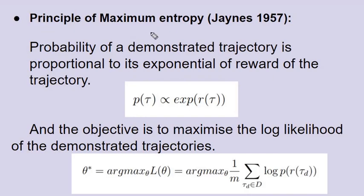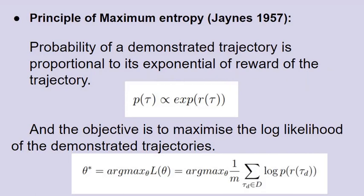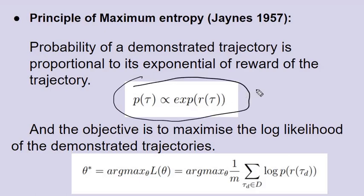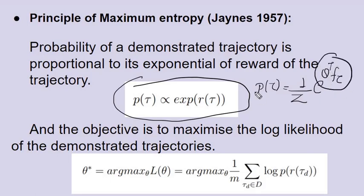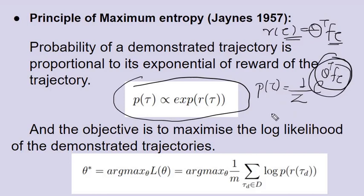Here comes the principle of maximum entropy: we want the probability of demonstrating trajectories to be exponential in the reward of the system. The probability of a trajectory is (1/Z) * exp(theta^T · f(tau)), and since reward is a linear function of features — theta^T · f(tau) — this means probability is proportional to the exponential of the reward of the trajectory.